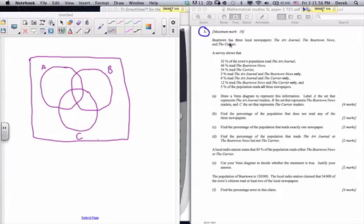Question 1. Beartown has three local newspapers: the Art Journal, the Beartown News, and the Courier. The survey shows the following information: 32% of the town's population read the Journal, 46% the Beartown News, 54% the Courier, 3% read the Art Journal and the Beartown News only, 8% read the Art Journal and the Courier only, 12% read the Beartown News and the Courier only, and 5% read all three newspapers.